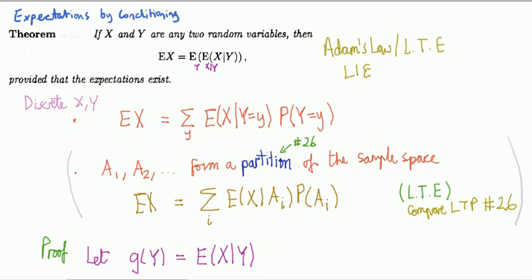I want to think back to the law of total probability presented in problem 26. This computes probability in terms of conditional probabilities.